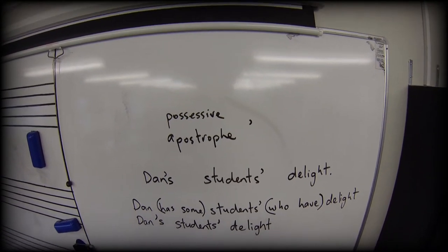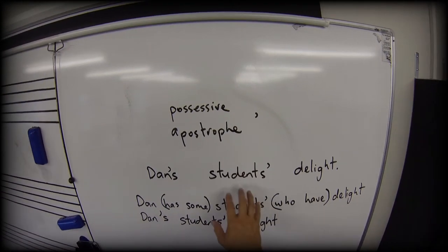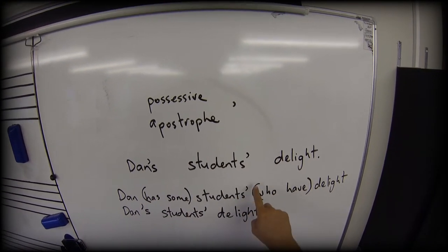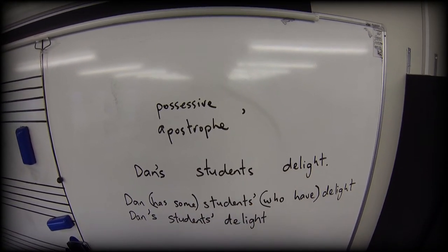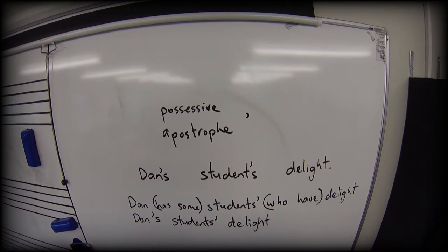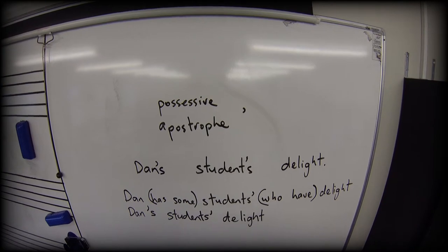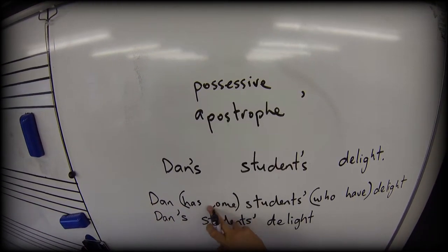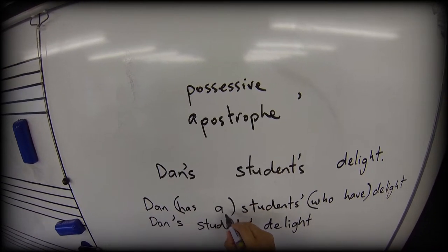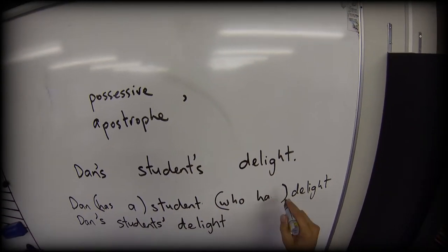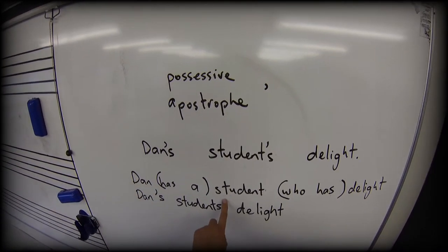It's incredibly important where we place apostrophes. For example, if I misplaced my apostrophe to here, I've reduced my class down to one student.